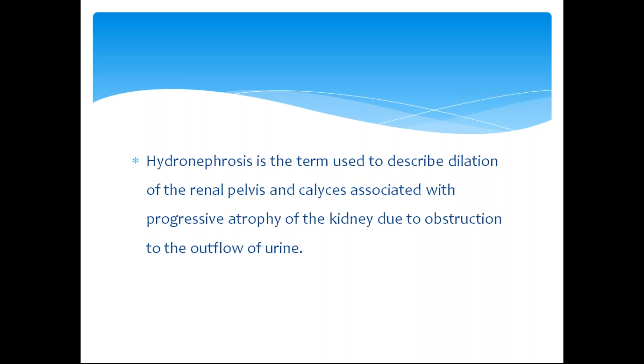Dilation of the renal pelvis and calyces leads to cortical atrophy because of an obstruction in the outflow of urine.